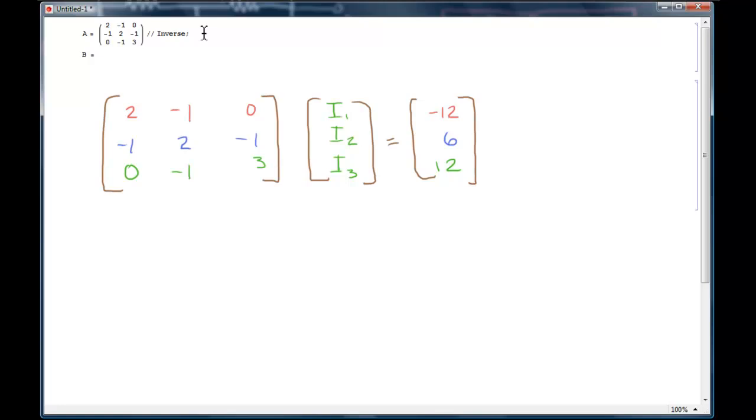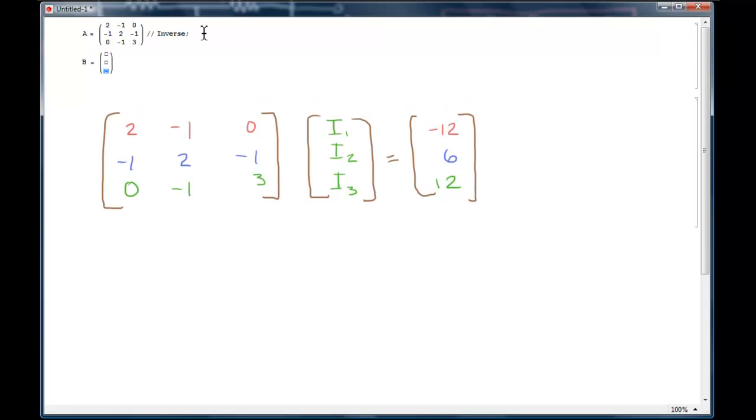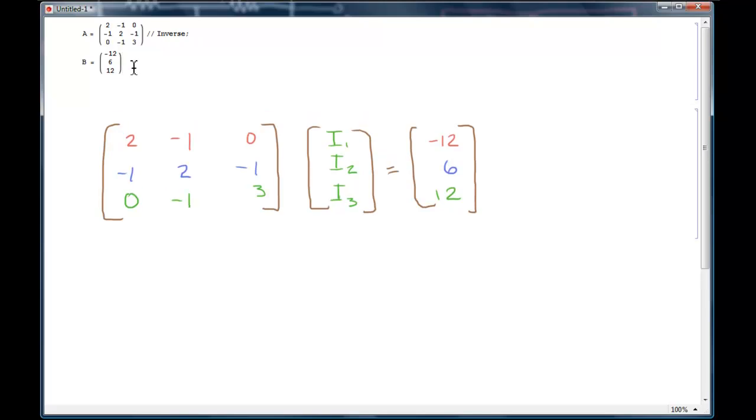Now we're going to create another matrix. This one will have a single column that's three rows high. So that's going to be Control Enter Enter. I'll just plug in the known values, negative 12, 6, and 12. And finally, what I really want to compute is the dot product. I forgot to put a semicolon up here because I don't want that to return anything either.